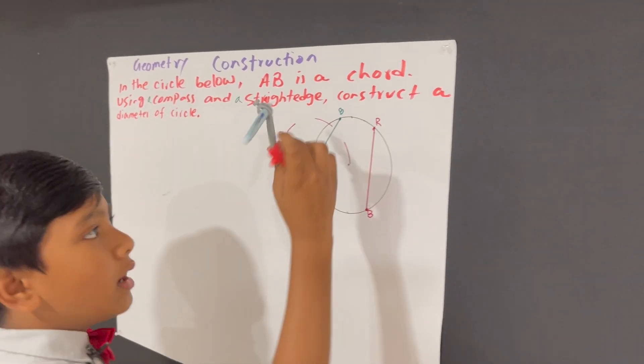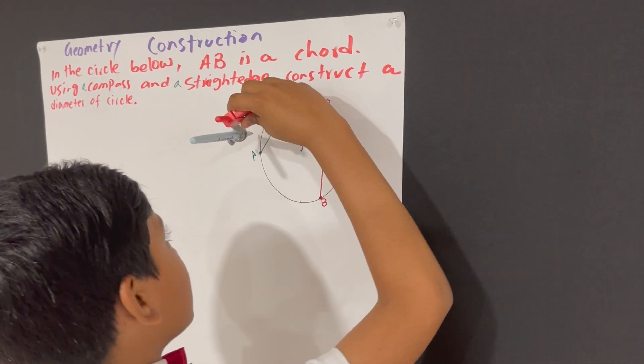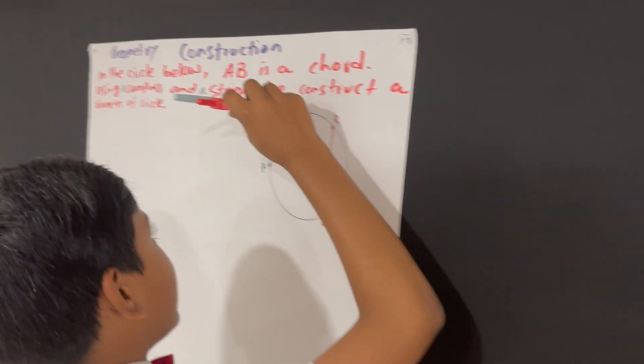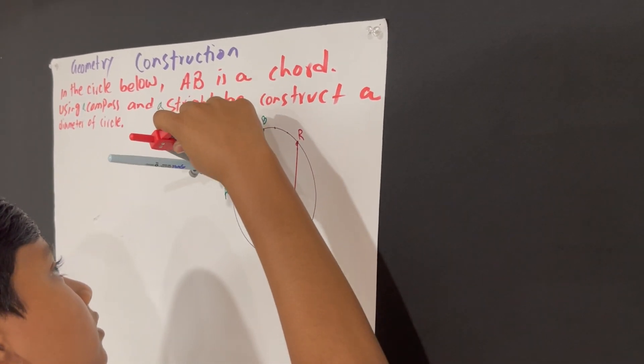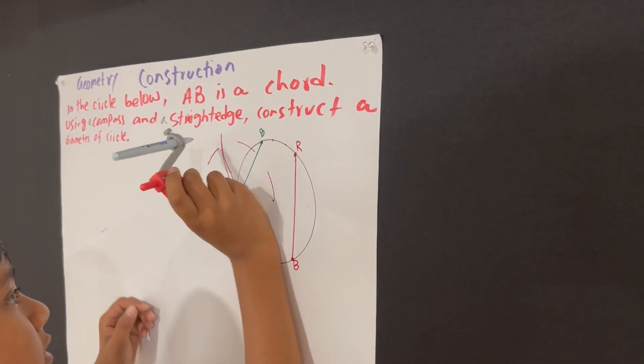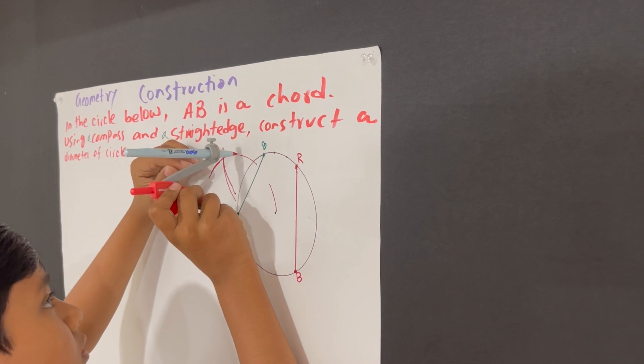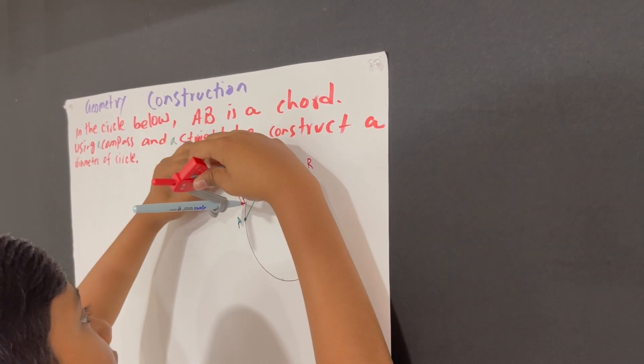And now, I'm going to do the same thing but for B. And I'm going to watch as they intersect. Oh wait, do they intersect yet? No, not yet. So, I'm going to extend A by a little bit. And then B is going to be this.